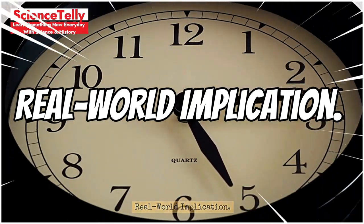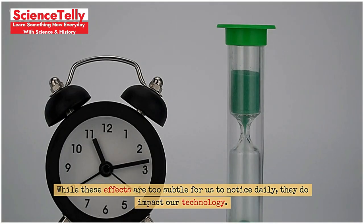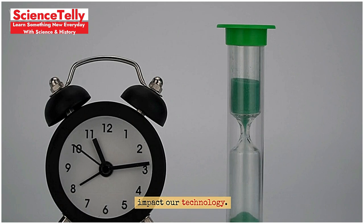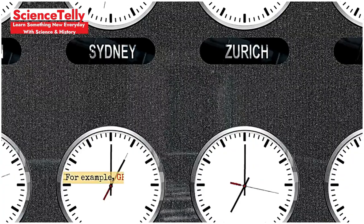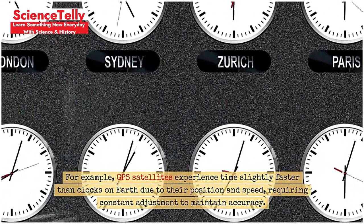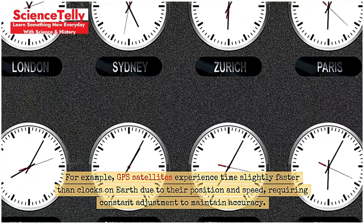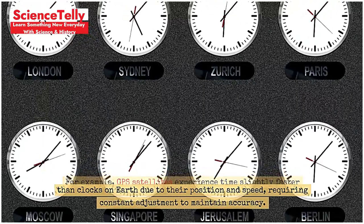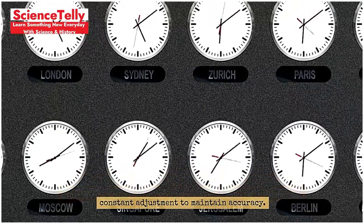Real-world implication. While these effects are too subtle for us to notice daily, they do impact our technology. For example, GPS satellites experience time slightly faster than clocks on Earth due to their position and speed, requiring constant adjustment to maintain accuracy.